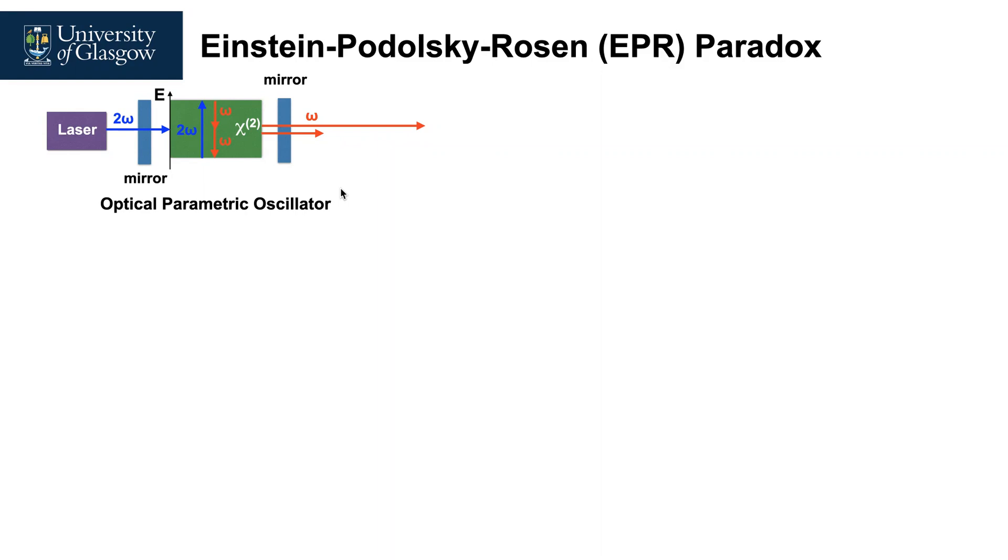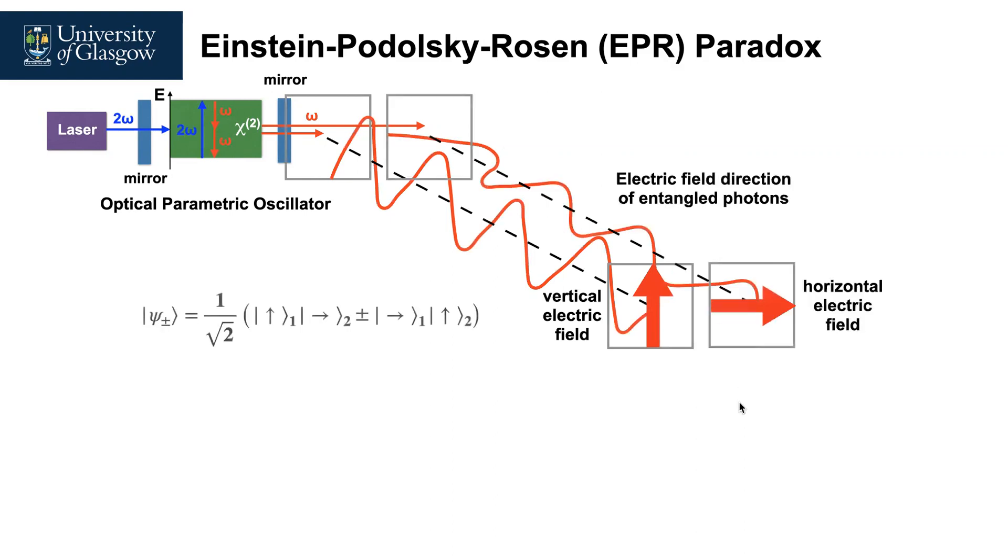If one entangled photon has a polarization with the electric field vertical, then the other entangled particle has to have a horizontal electric field.